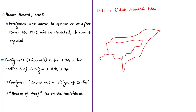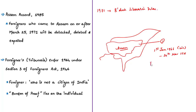There are two key provisions in the Assam Accord for today's discussion. First, foreigners who came to Assam after 1st January 1966 and up to 24th March 1971 shall be detected as per the Foreigners Act of 1946 and the Foreigners Tribunals Order of 1964, and their names will be expelled from electoral rolls. Second, foreigners who came on or after 25th March 1971 shall continue to be detected, deleted, and expelled in accordance with the law. The Foreigners Tribunal was formed in Assam to hear citizenship claims.